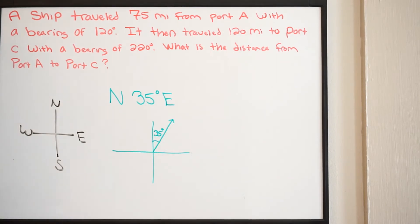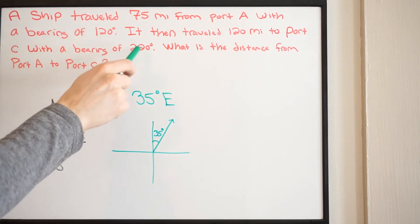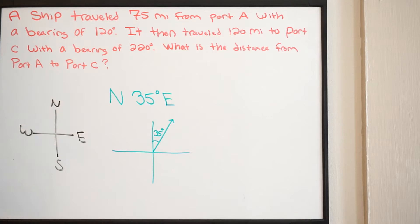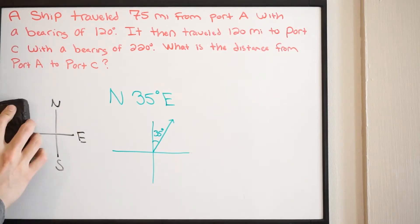However, in this particular problem, notice that we aren't given any of the cardinal points. We're just given the bearing — 120 degrees and 220 degrees. So let's talk about what to do when you're given just the bearing with no cardinal points like north, east, south, or west.